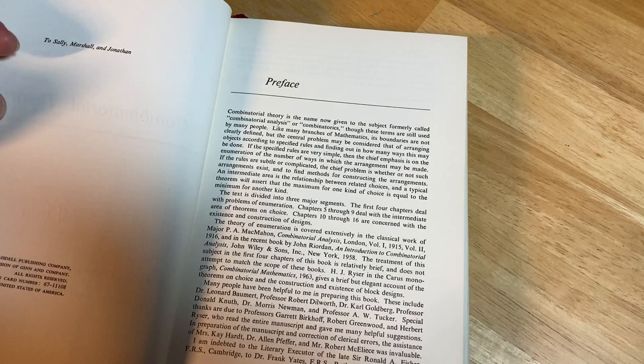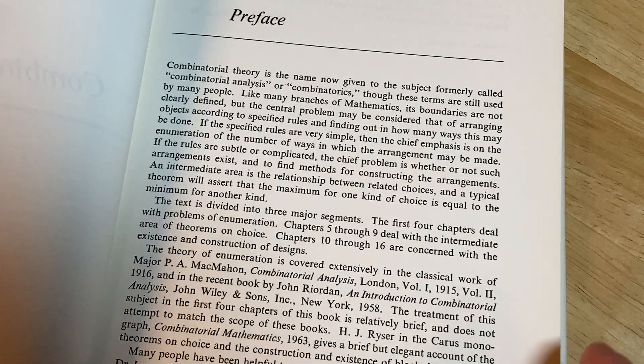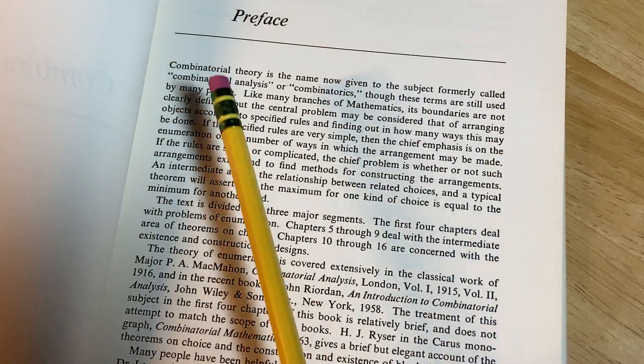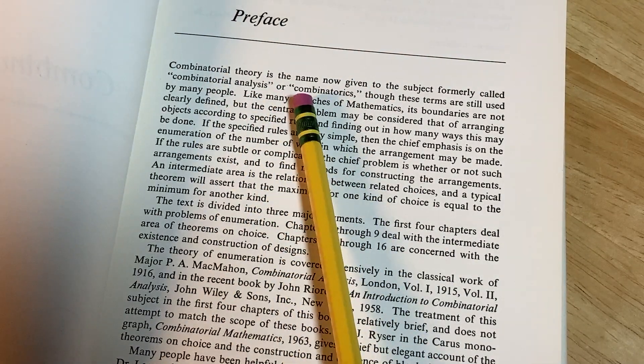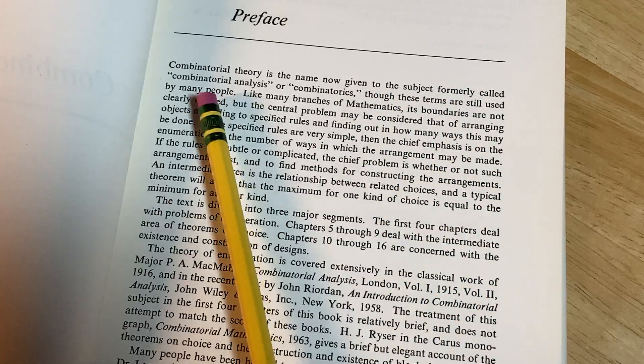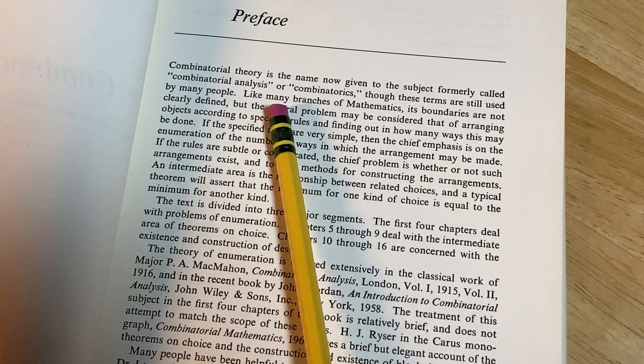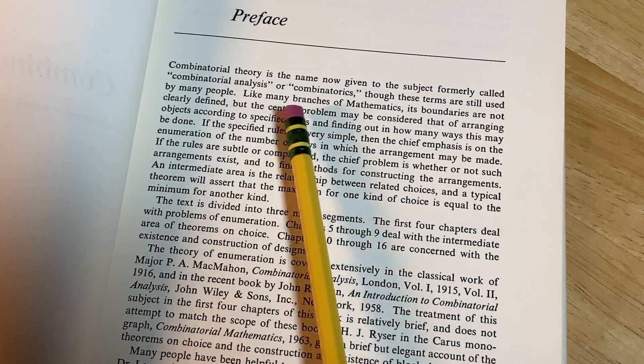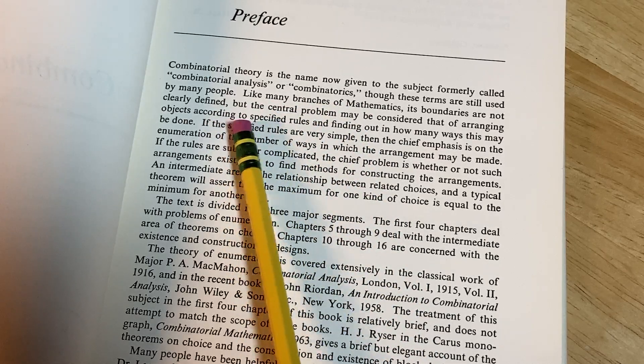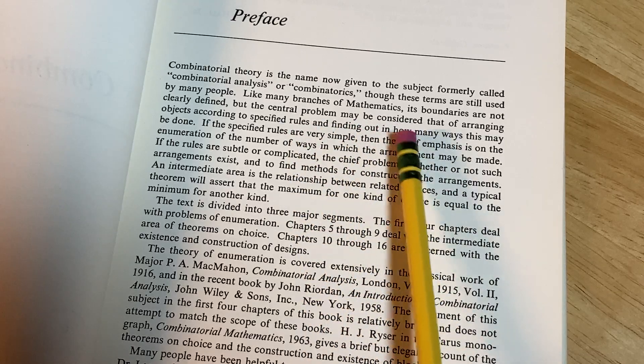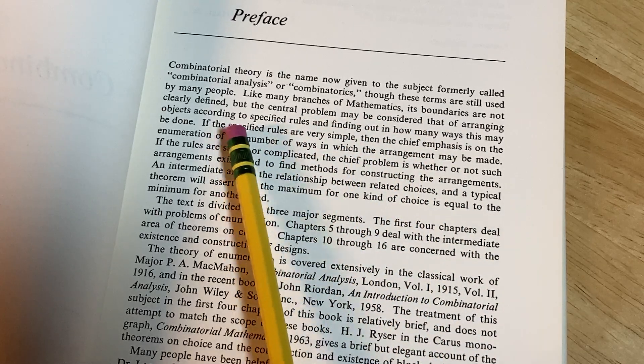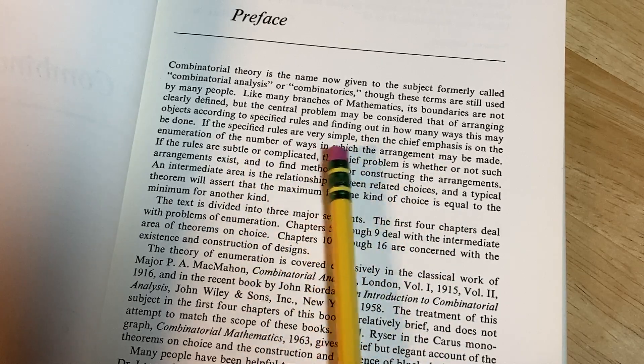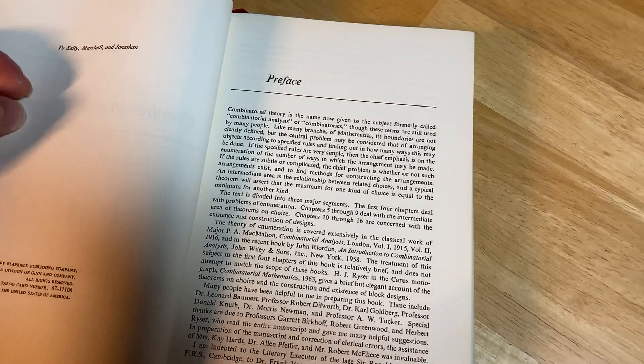Here's the preface. Let's take a look at it. Combinatorial Theory is the name now given to the subject, formerly called combinatorial analysis or combinatorics, though these terms are still used by many people. Like many branches of mathematics, its boundaries are not clearly defined. But the central problem may be considered that of arranging objects according to specified rules and finding out in how many ways this may be done. If the specified rules are very simple, then the chief emphasis is on the enumeration of the number of ways in which the arrangement may be made.